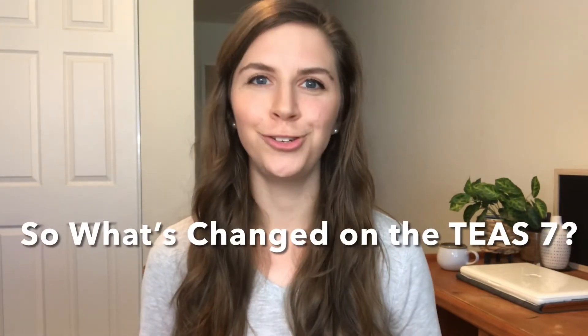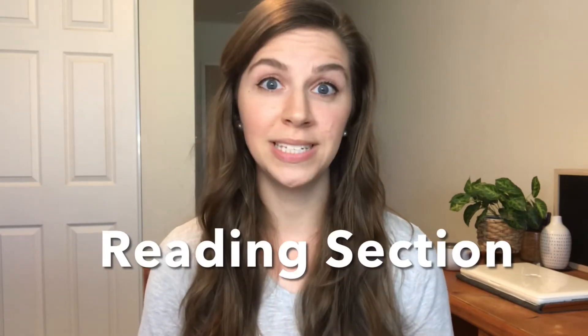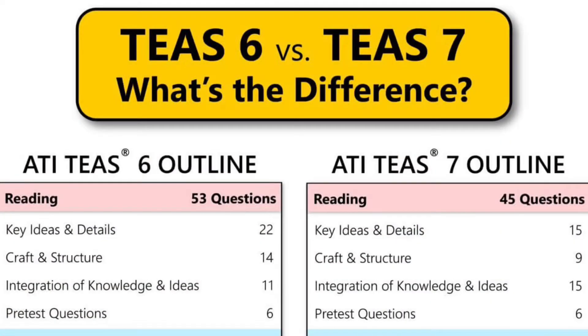Now let's jump into what has actually changed on the TEAS 7 exam. We'll do a quick breakdown of what has changed on each individual section. Starting with the reading section: on the TEAS 6 exam, the reading section had 53 questions and a time limit of 64 minutes. Great news for those of you who may not be fans of the reading section — ATI has lowered the number of questions on the TEAS 7 reading section to 45 questions total, with a time limit also lowered to 55 minutes.